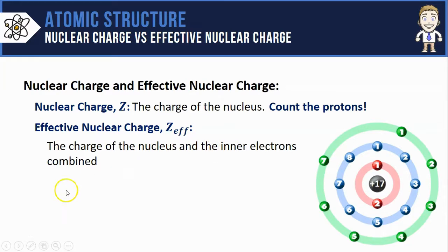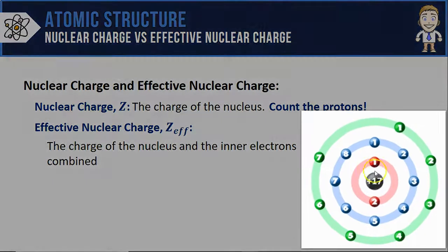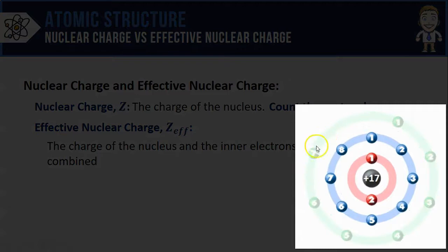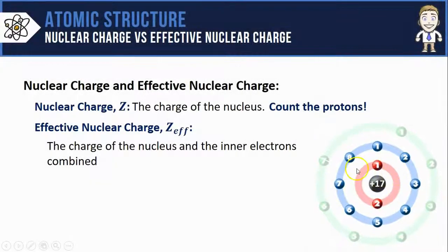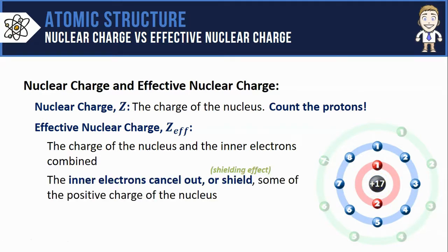Take this chlorine atom for example, its effective nuclear charge is like saying let's ignore these outermost valence electrons and just think about the charge that results from this plus 17 nucleus and these core electrons combined together. That combined charge will be different than the charge of the plus 17 nucleus all by itself because those inner electrons will cancel out or shield some of that positive 17 charge of the nucleus. This is often referred to as the shielding effect.